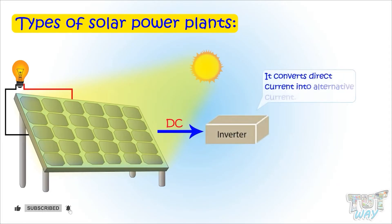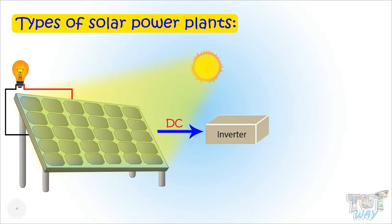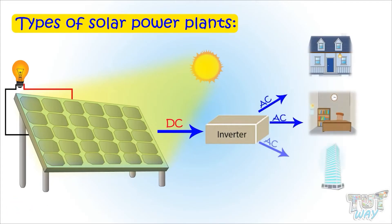The direct current is then sent to the power inverter which converts it to alternating current — AC. It is in this form that energy is supplied to homes, offices, and other buildings, which we also call electricity.